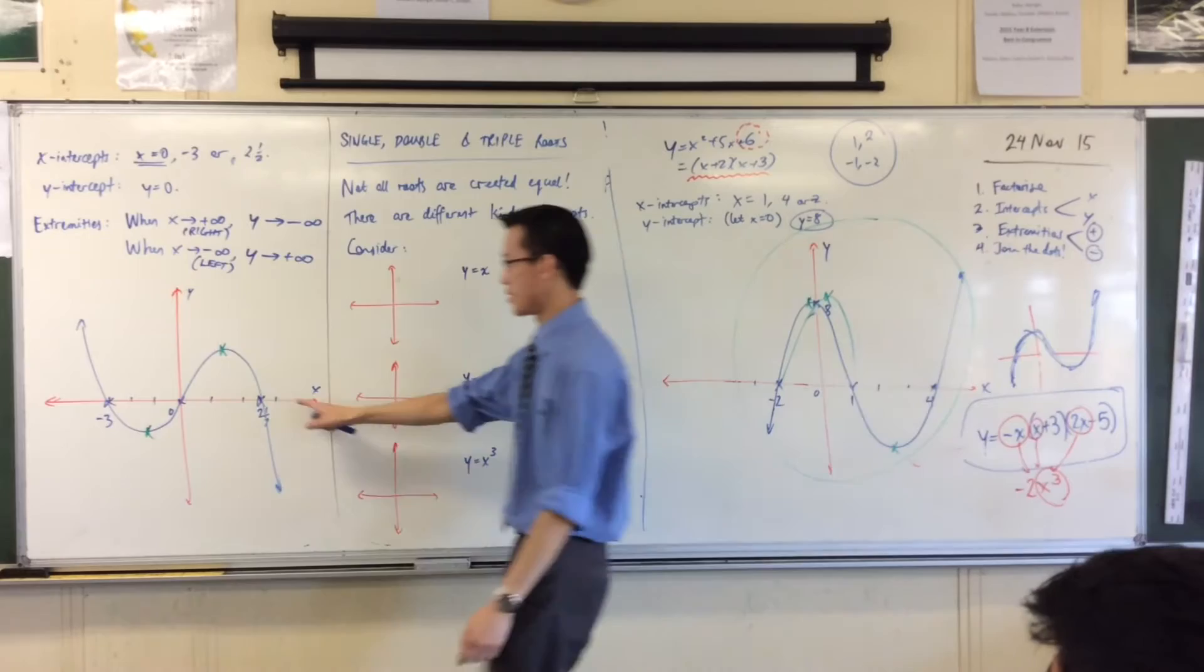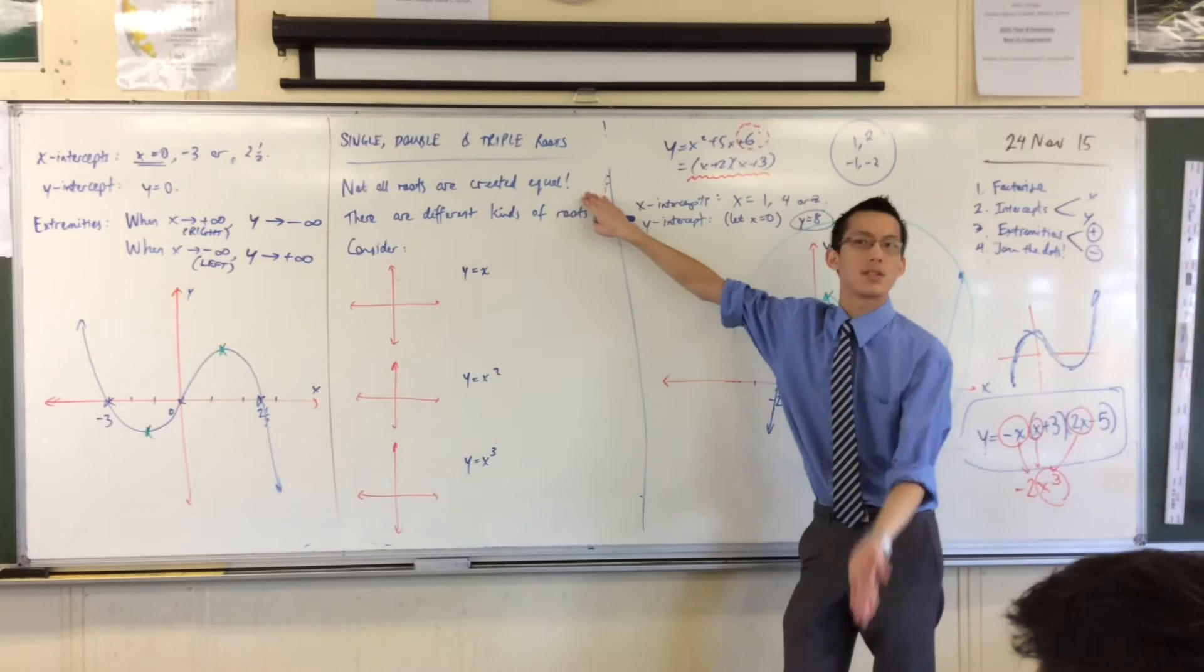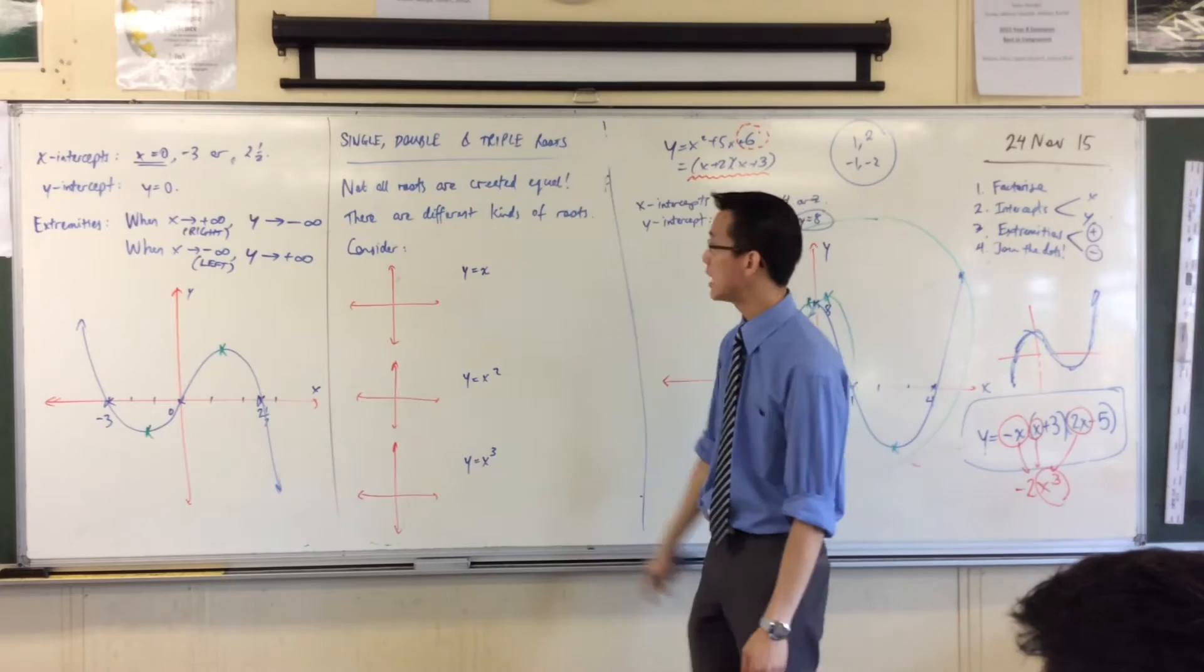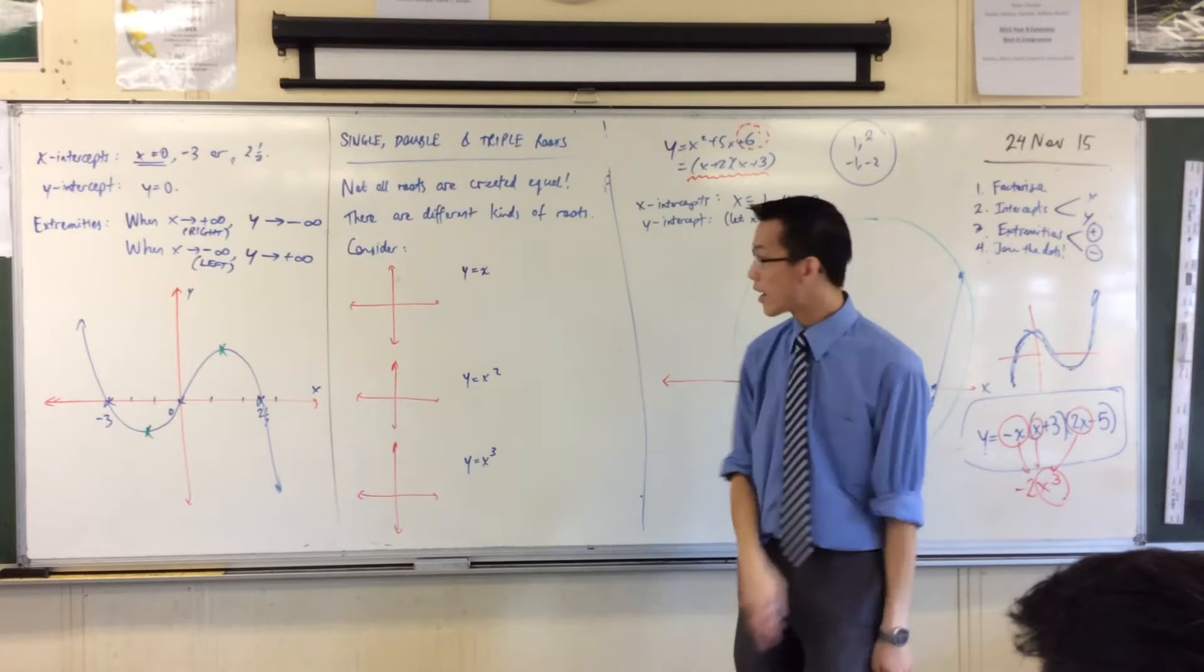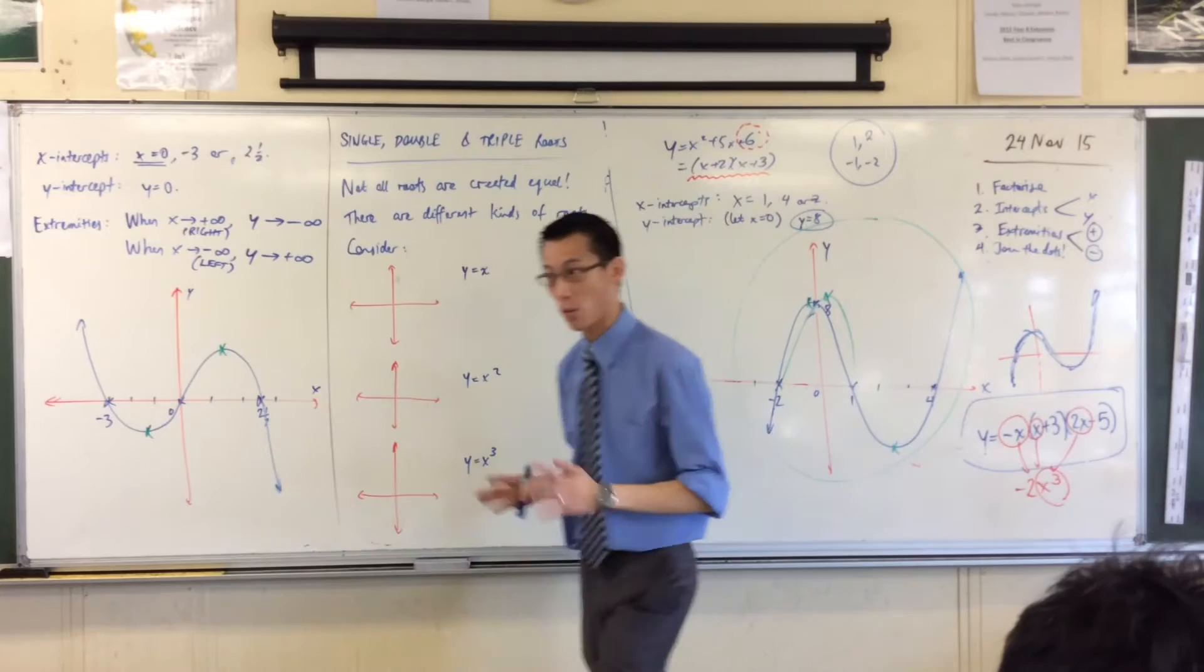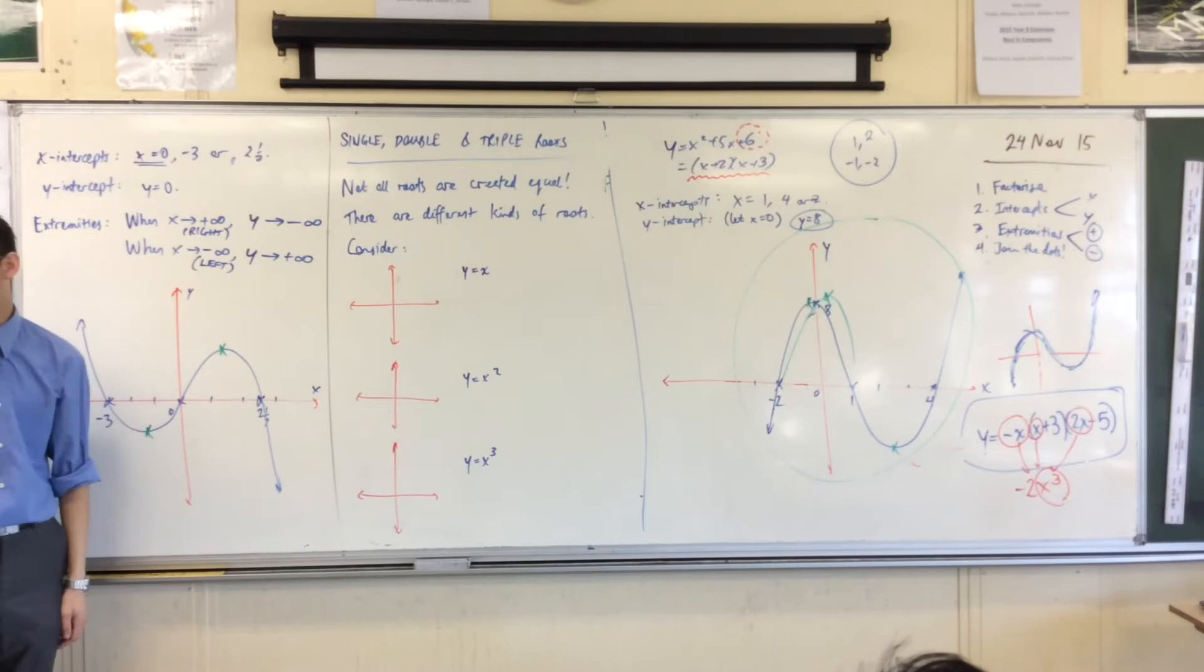But not all roots are the same. They're not all created equal. There are different kinds, and I want to tell you about three kinds, the most important three. They're called single, double, and triple roots. Now, to illustrate how they are different, we are going to look at these three example curves, because we know how to do all of these curves.